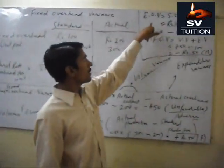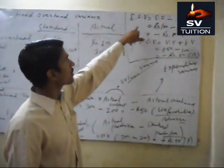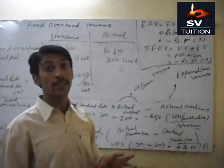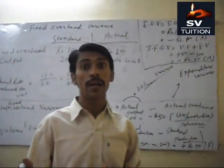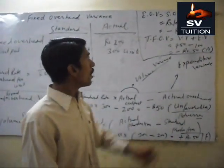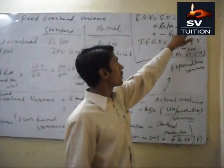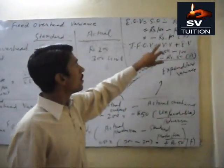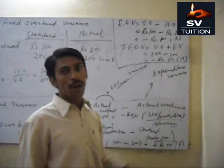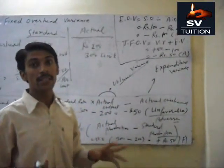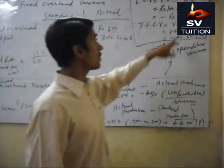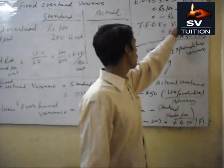Expenditure overhead variance is the difference between standard overhead and actual overhead: 100 minus 200, which equals 100 adverse. Our expenditure overhead is not good — this is adverse, or unfavorable.